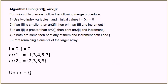Now let's look at the algorithm to find the union. We'll have two index variables i and j, initialized to 0. We start comparing the element at index i of array 1 with the element at index j of array 2. If the element at index i of array 1 is smaller, we print that element and increment i. If it's the other way around — element at index i is greater — we print the element at index j of array 2 and increment j.